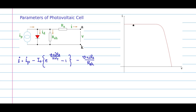There are three significant points in the IV characteristic. We will discuss all three significant points one by one. The first point is at the intersection here — let me mark that. This is one point that we need to discuss, and I will call this as the short circuit point. I will call this one as Isc — I short circuit.